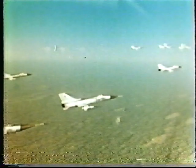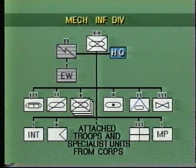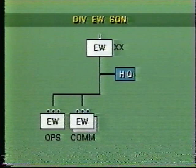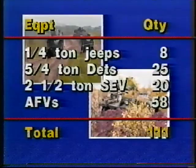The electronic warfare squadron is organizationally integral to the division headquarters and signal regiment, but functions as a separate entity. It includes a headquarters, an operations troop, two identical communication troops, a radar troop, and a combat service support troop. The squadron is equipped with a mix of soft-skinned and armored vehicles. As a general rule, forward-sited elements such as jammers and direction finding stations are armored.